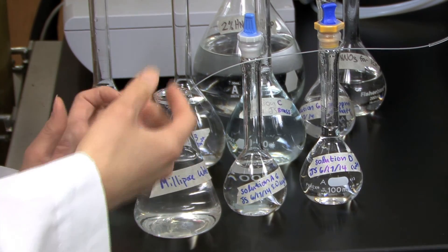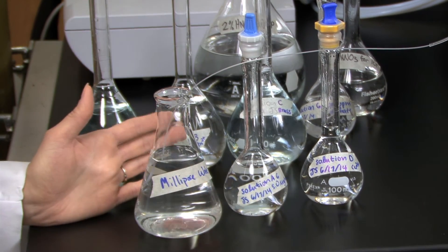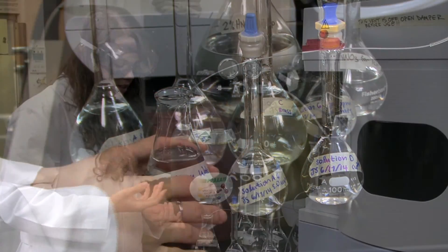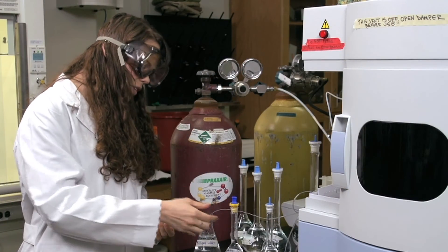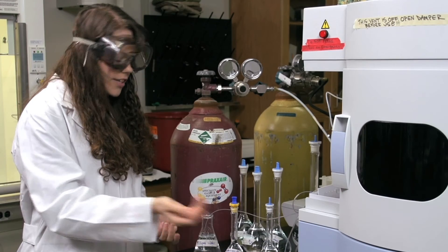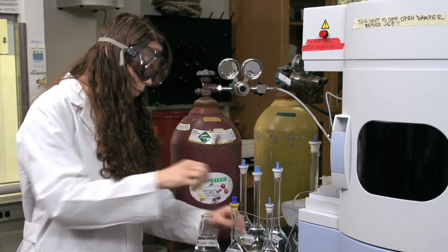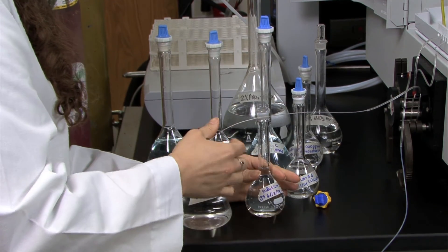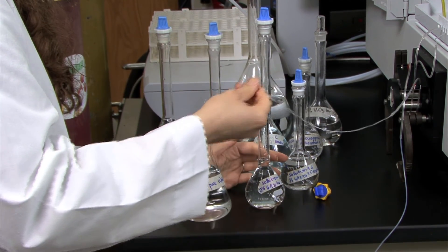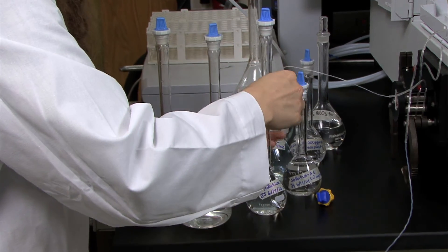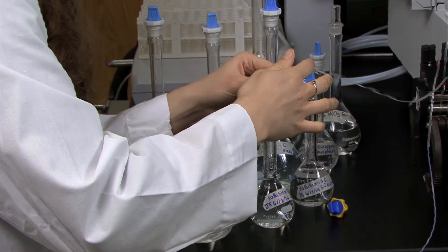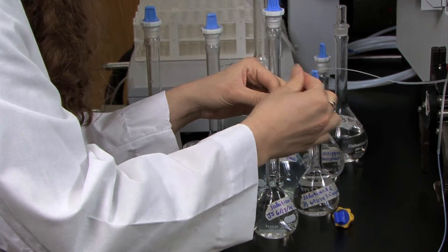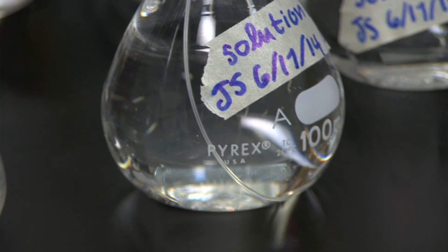If you have any problems or difficulties during the experiment, please ask your TA for assistance. To transfer the inlet line to the next solution, simply uncap the volumetric flask and move the line directly in, making sure the plastic tip at the end is fully submerged.